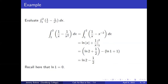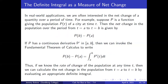Evaluate the integral from one to two of (1/x − 1/x²) dx. This equals the integral from one to two of (1/x − x⁻²) dx, which is ln|x| + 1/x evaluated from one to two, which is (ln 2 + 1/2) minus (ln 1 + 1), which equals ln 2 − 1/2. We recall here that ln 1 = 0.